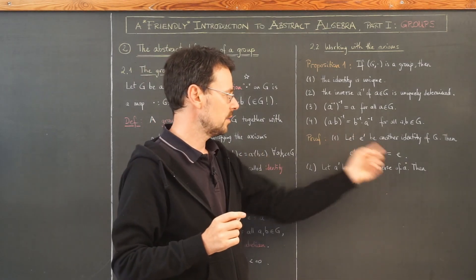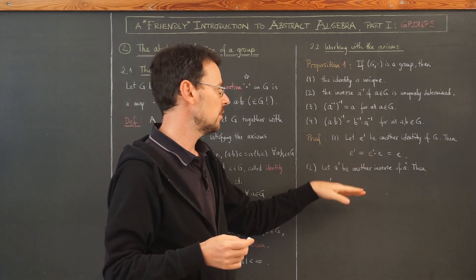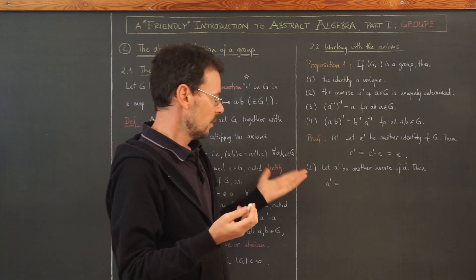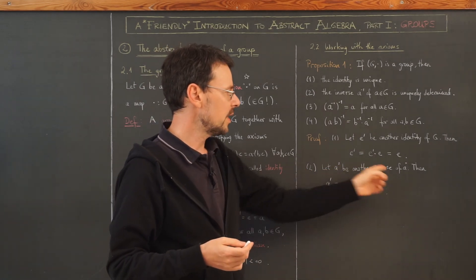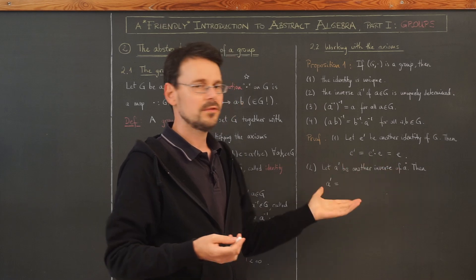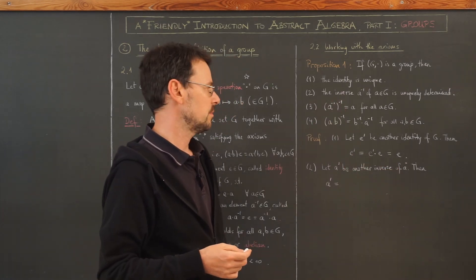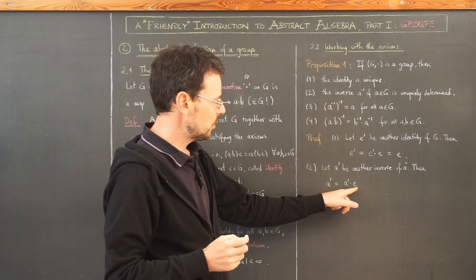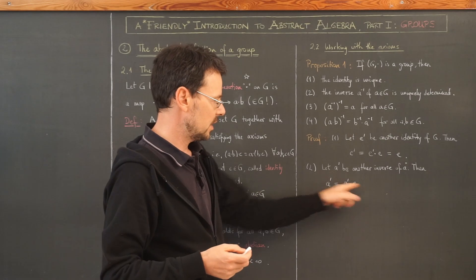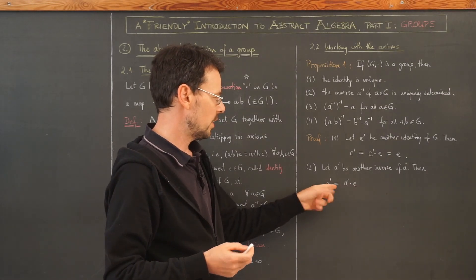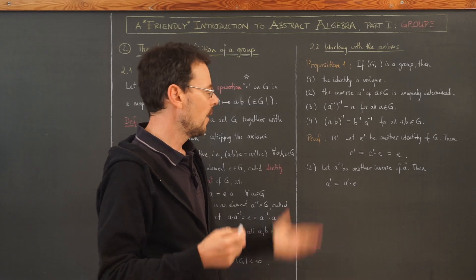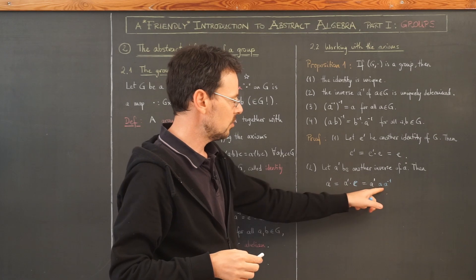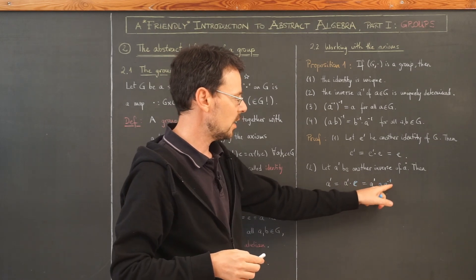Now try number two. Let a' be another inverse of a; we have to show that a' = a⁻¹. We can always insert an identity, since it changes nothing: a' = a'·e. And by definition of the inverse, the identity can be written as a·a⁻¹.